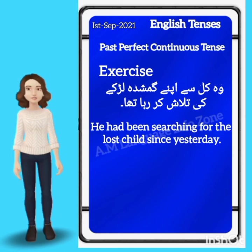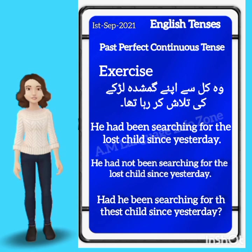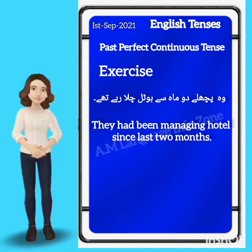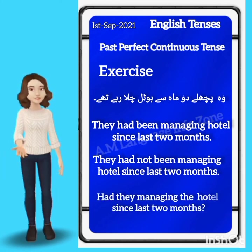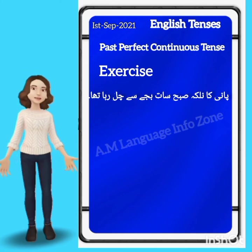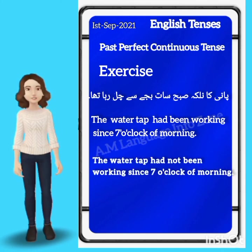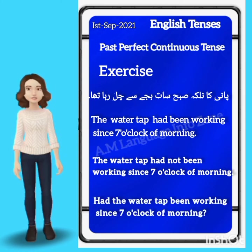More practice with 'since': 'He had not been searching for the lost child since yesterday.' Interrogative: 'Had he been searching for the lost child since yesterday?' Another example: 'Had they been managing the hotel since last two months?' And: 'The water tap had been working since 7 o'clock in the morning.' Negative: 'The water tap had not been working since 7 o'clock in the morning.'